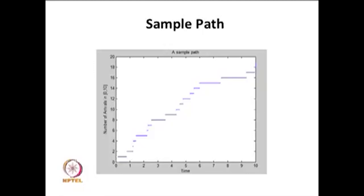If you see the sample path carefully, you can find that the increment is always by 1 over time — there is no 2-arrival or more than 1 arrival in a very small interval of time. You can also observe that the inter-arrival time is going to be exponentially distributed with the parameter lambda, whatever lambda I have chosen in this sample path. This is the way the sample path of the Poisson process looks like.